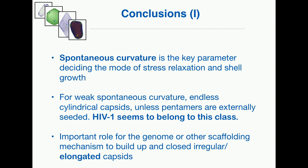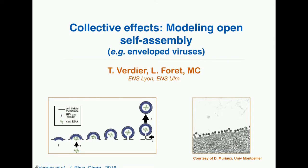This ends my first part about the single object. The main conclusion is that at the level of a single protein, it is really the spontaneous curvature that determines the shape you end up with — whether you have an icosahedron or a more elongated shape. And importantly, it seems that for HIV, and maybe other viruses, the interaction of the growing protein surface with something else — the genome or the outer membrane — can give rise to pentamers in order to close the structures.